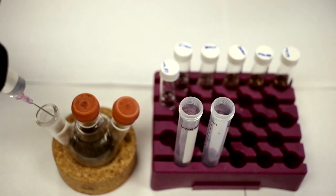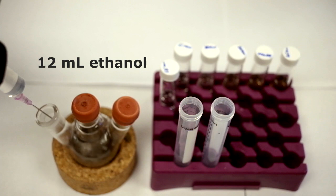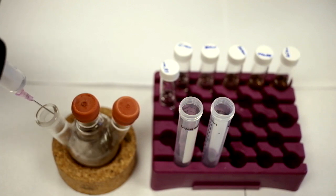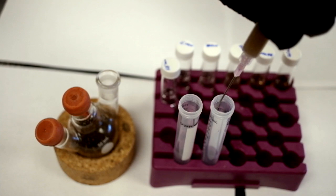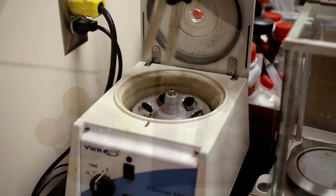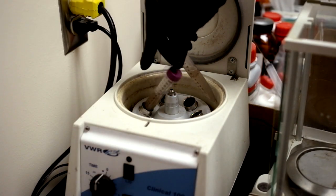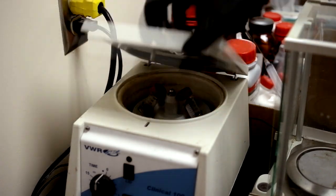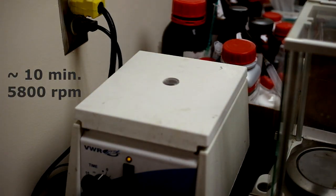Once the reaction flask is cooled to room temperature, we add 12 ml of ethanol and split between two centrifuge tubes, topping each off with ethanol. Shake the centrifuge tubes to mix and place into the centrifuge. Spin for about 10 minutes at 5800 RPM.